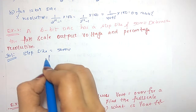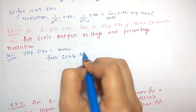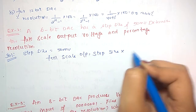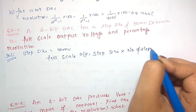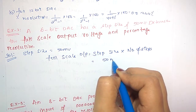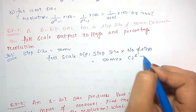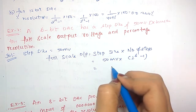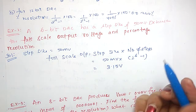First, what is given: step size equals 50 millivolts. What we have to find is full scale output. Full scale output equals step size multiplied by number of steps. Step size is already given as 50 millivolts, and number of steps can be found using 2 power 6 minus 1, giving a full scale output of 3.15 volts.